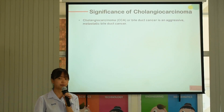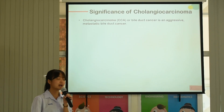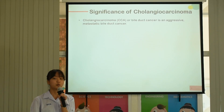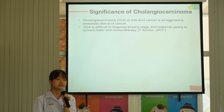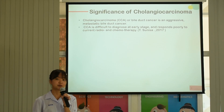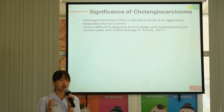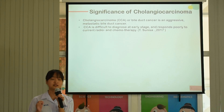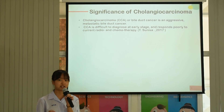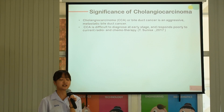Let's start with the significance of Cholangiocarcinoma. Cholangiocarcinoma, or CCA, we can call it bile duct cancer. CCA arises from bile duct epithelial cells which exist inside and outside of the liver. CCA is difficult to diagnose at an early stage and shows limited response to radiation and chemotherapy.